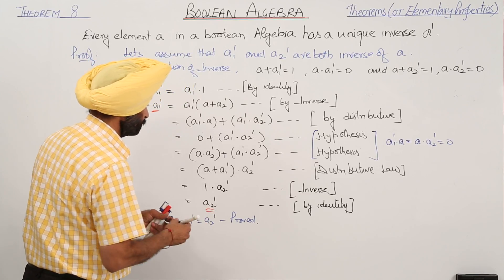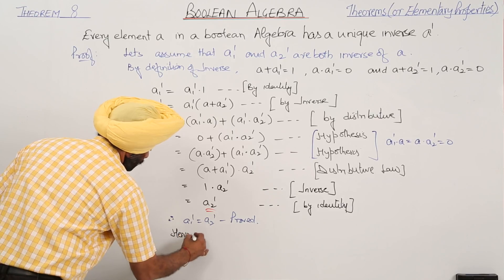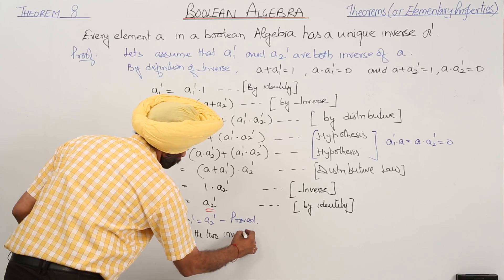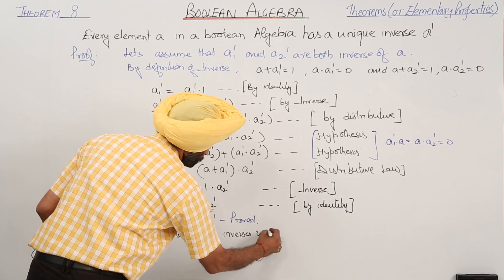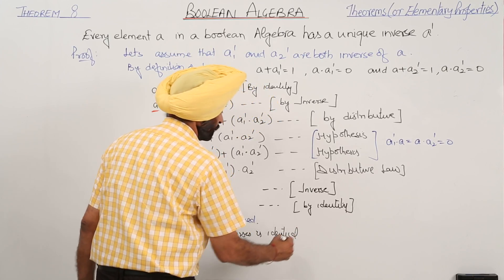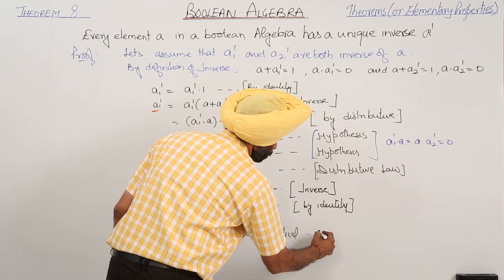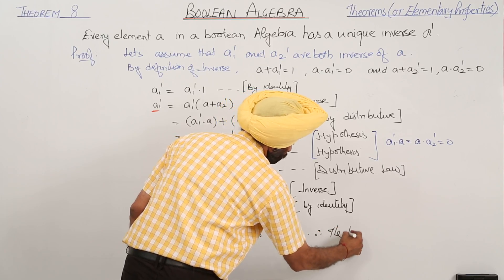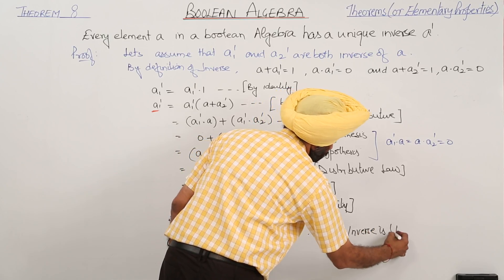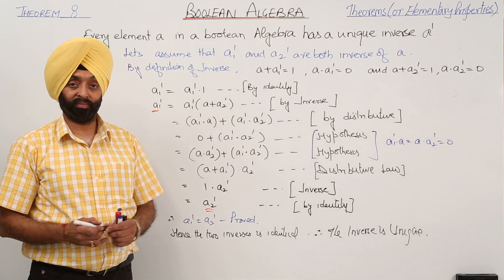Hence, the two inverses are identical. Therefore, A inverse is unique. So the inverse is unique. Okay, so let's try to solve the problem. We don't need to solve it anymore. See you next week.